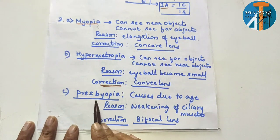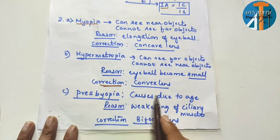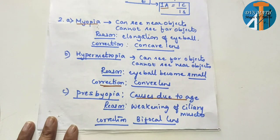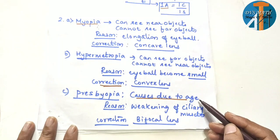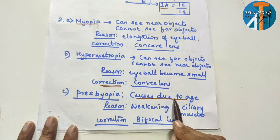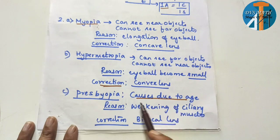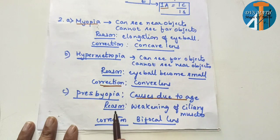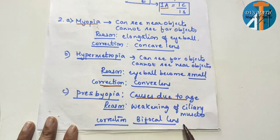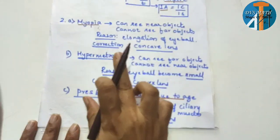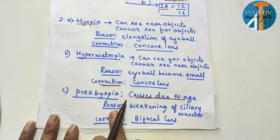The next eye defect is presbyopia. Presbyopia causes due to age. The reason is weakening of ciliary muscles. The correction is bifocal lens. So: myopia, hypermetropia, presbyopia — these are the three eye defects.